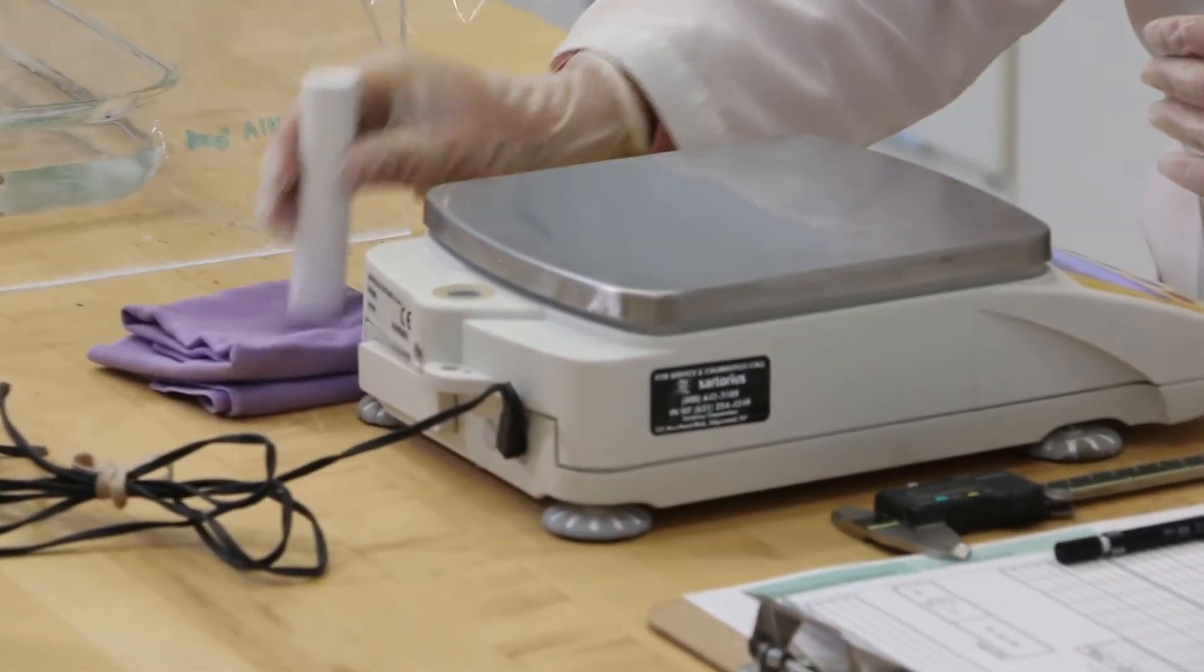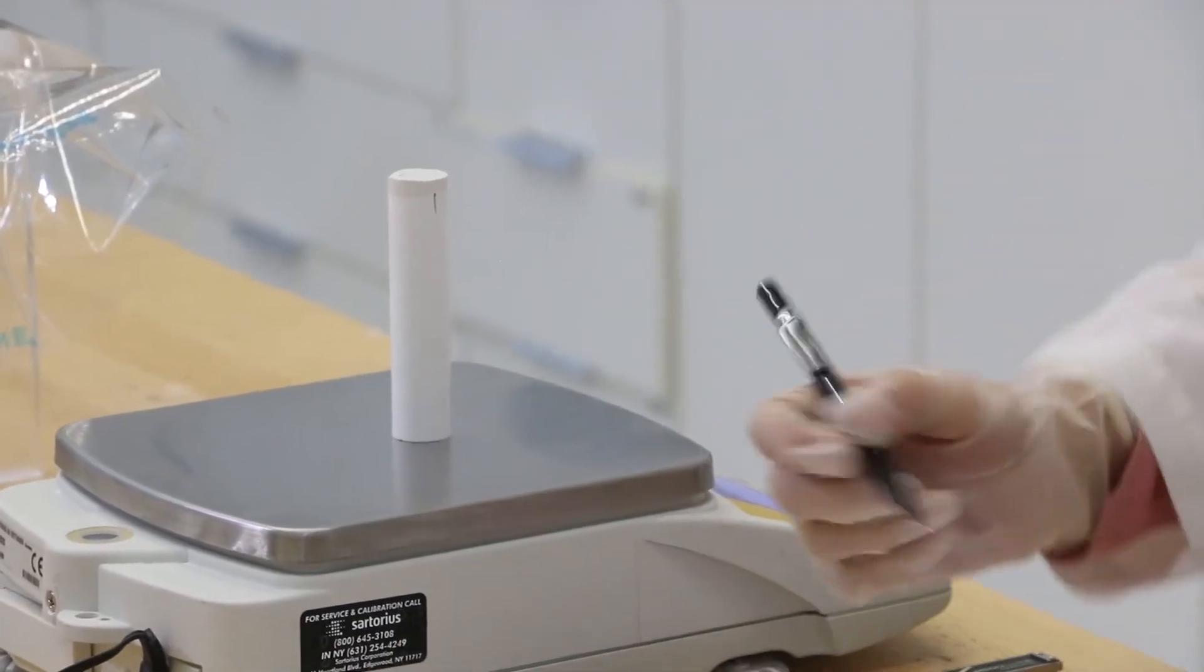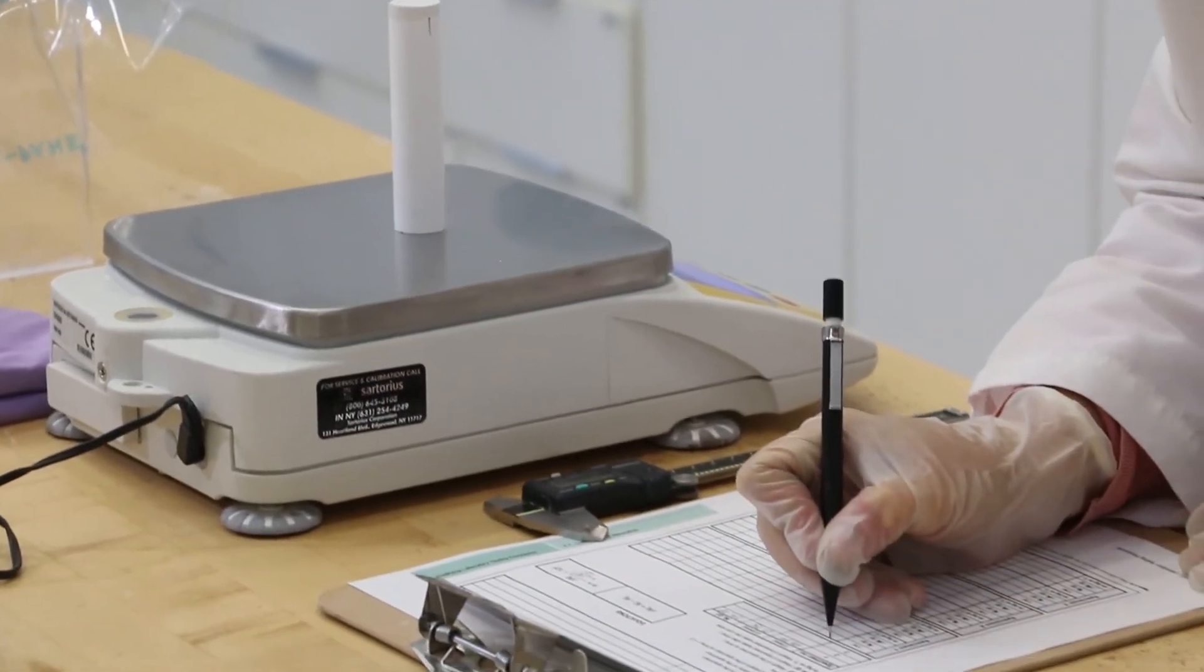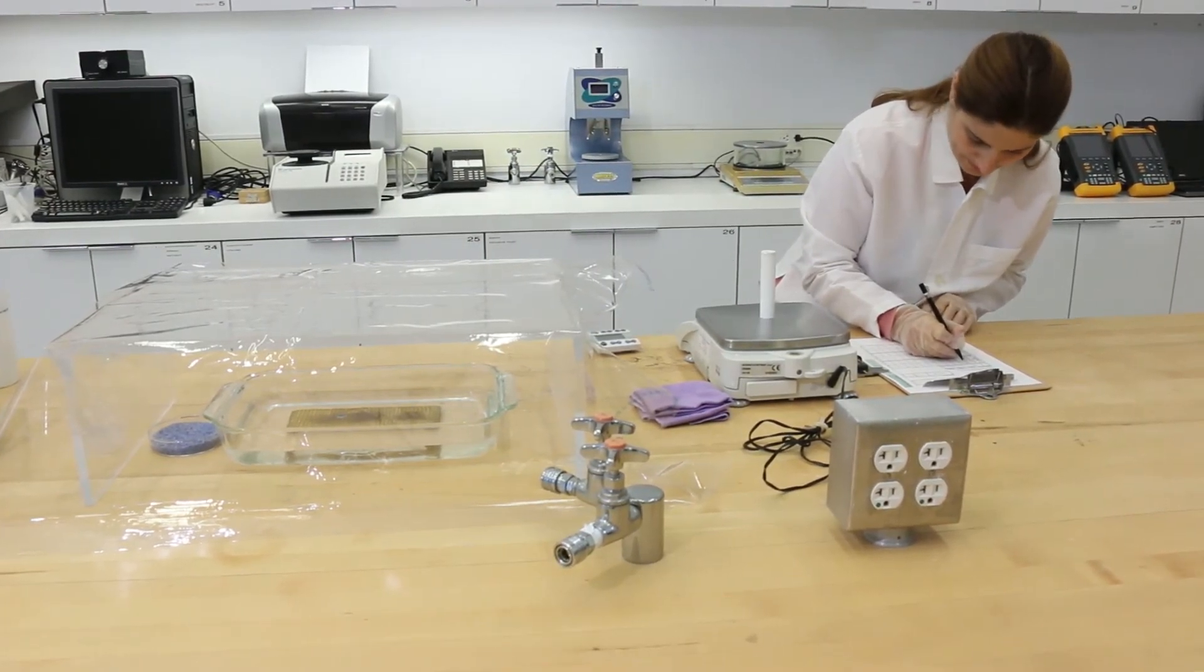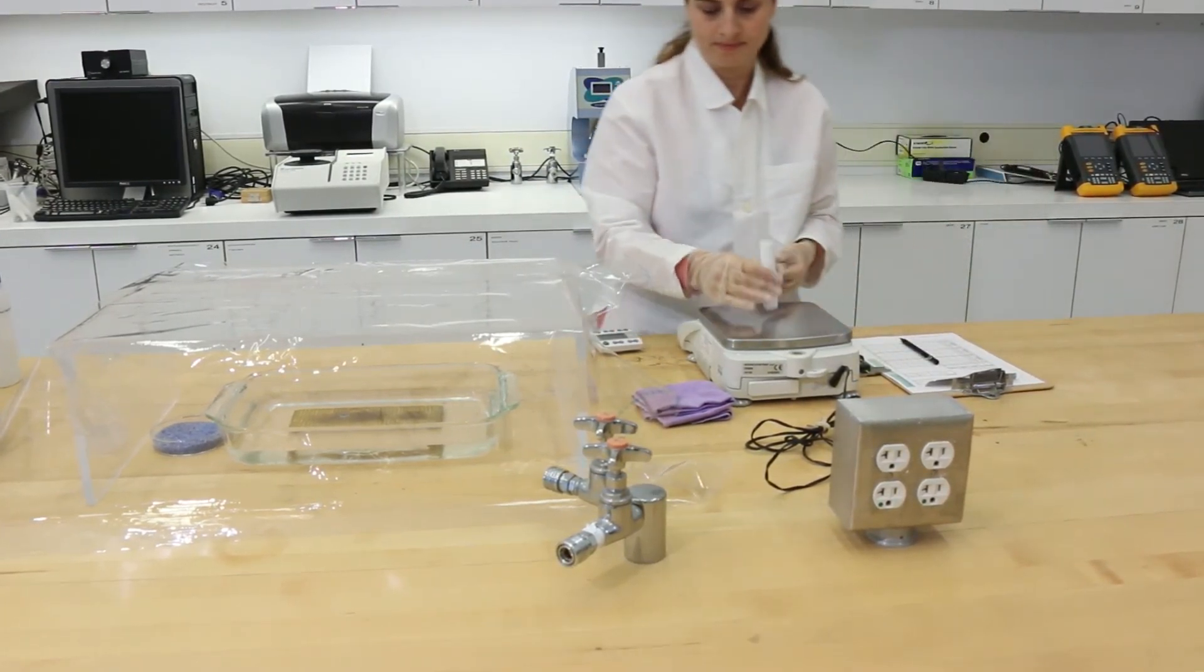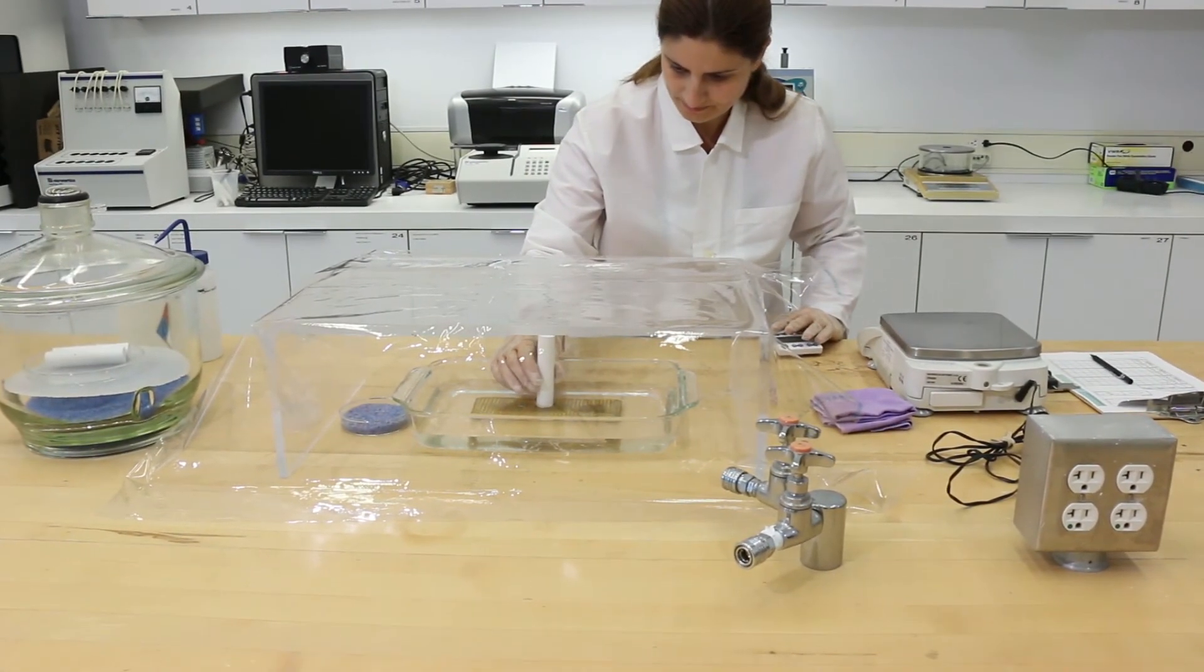Lightly blot the wet face with a damp cloth to remove surface water and weigh the specimen while the wet face is at the top. Record the weight as MT on the data collection sheet. Place the specimen back on the stand as quickly as possible. Start the stopwatch again.